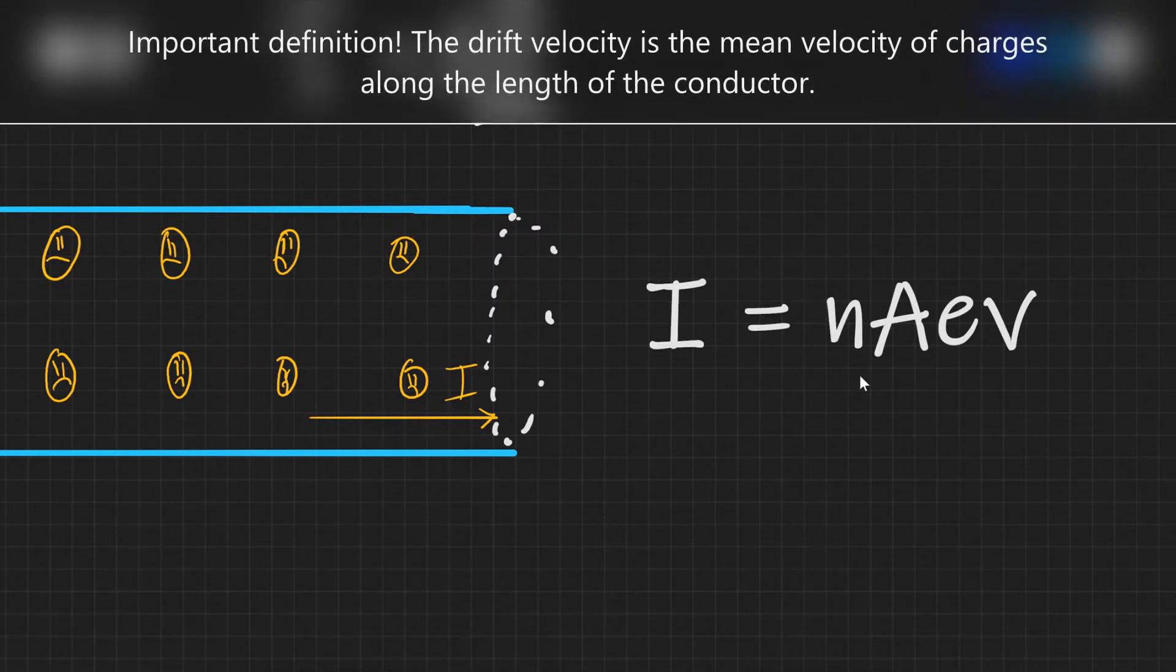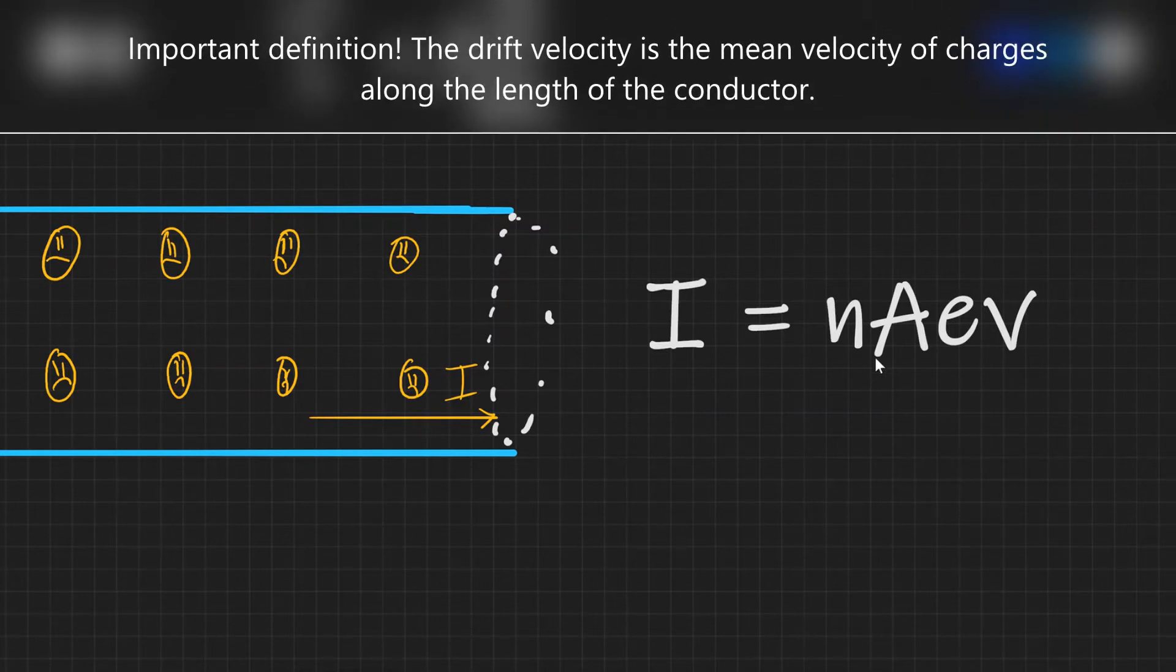And now we can introduce this concept of drift velocity. Now drift velocity is actually the speed at which the electrons are moving along the wire. And the word along is actually really important.